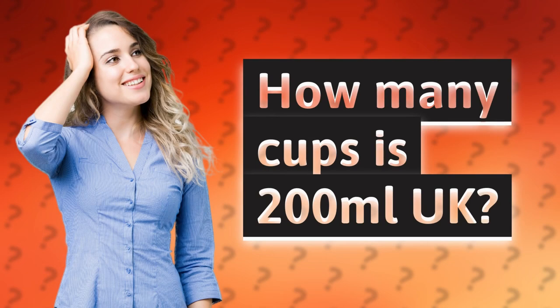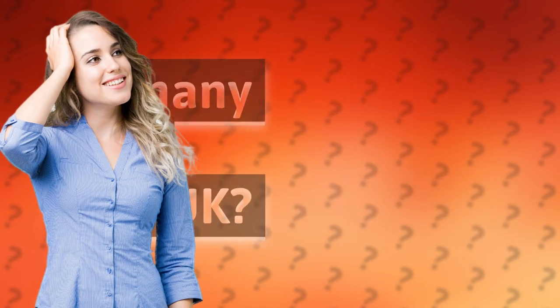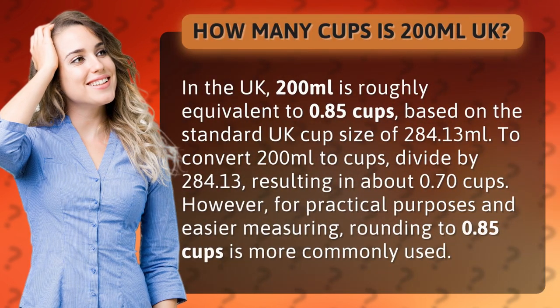How many cups is 200 milliliters in the UK? In the UK, 200 milliliters is roughly equivalent to 0.85 cups, based on the standard UK cup size of 284.13 milliliters. To convert 200 milliliters to cups, divide by 284.13, resulting in about 0.70 cups. However, for practical purposes and easier measuring, rounding to 0.85 cups is more commonly used.